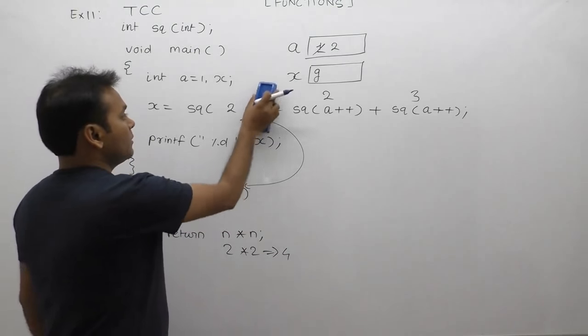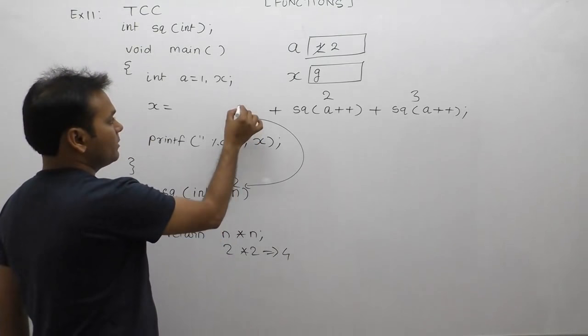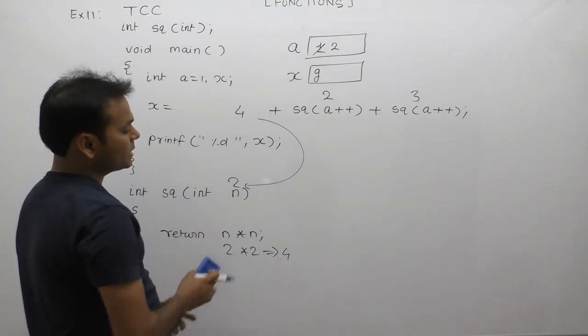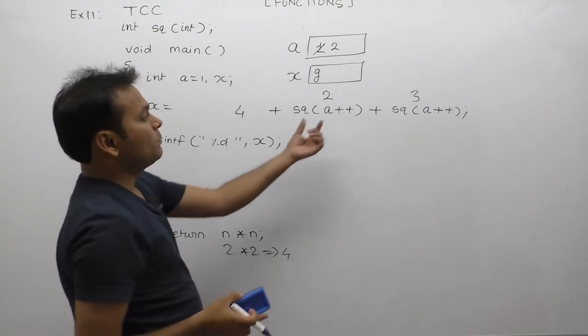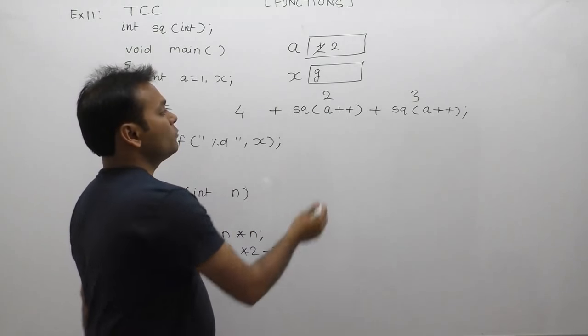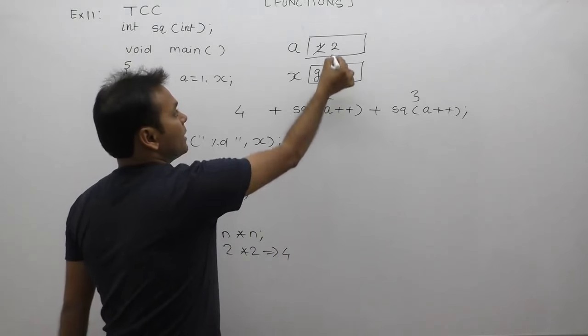Next, the second case - again we found post-increment. According to a++, we replace the current value of a, which is 2. Then increment a.